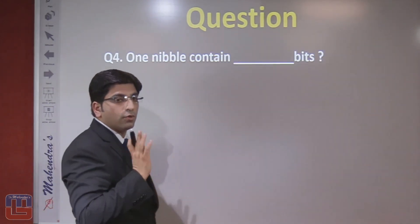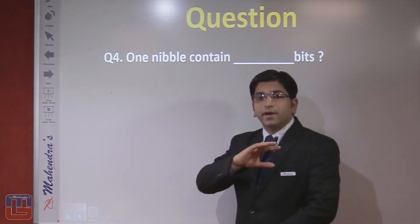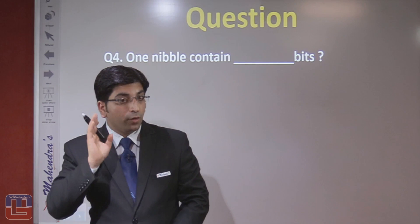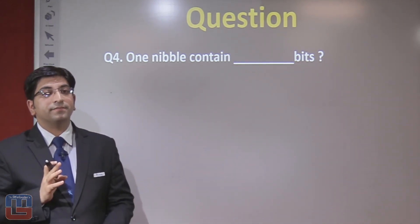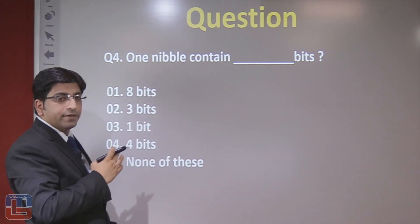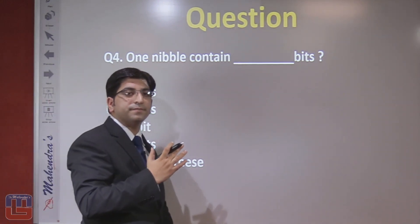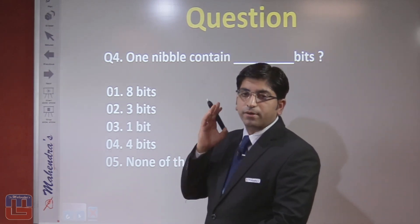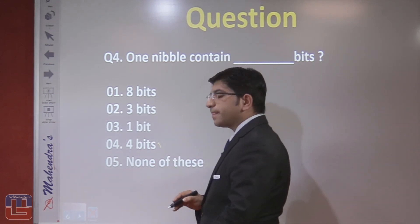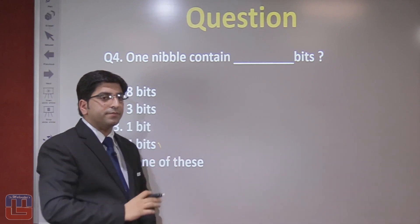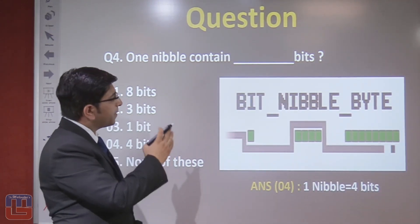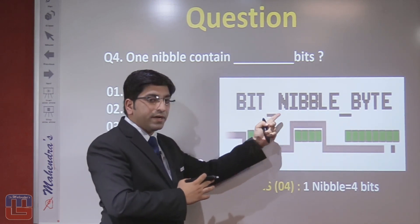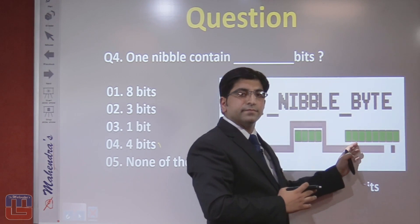Question number 4: one nibble contains how many bits? Options are 8, 3, 1, 4, or none of these. One nibble is the combination of 4 bits, so option number 4 is the right answer. A bit contains a single character or digit; the combination of 4 bits is called a nibble, and the combination of 8 bits is called a byte.